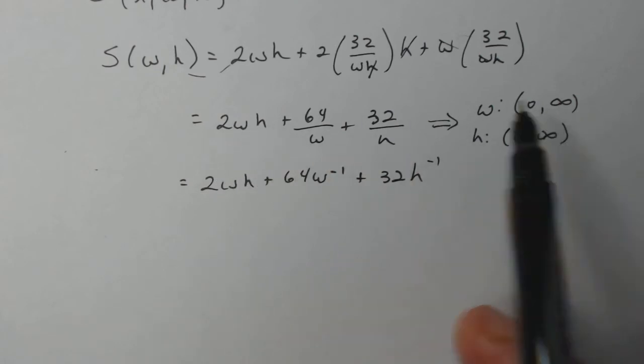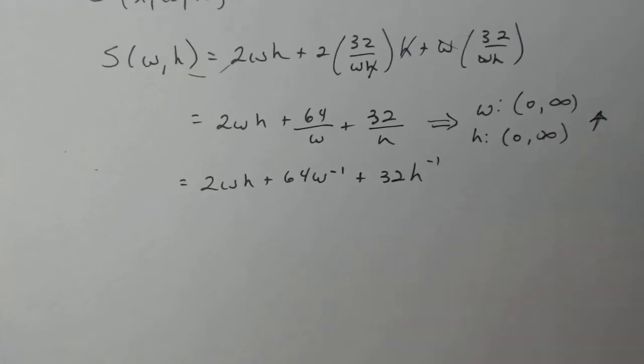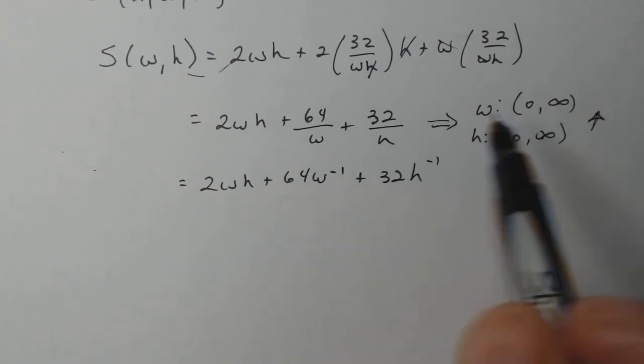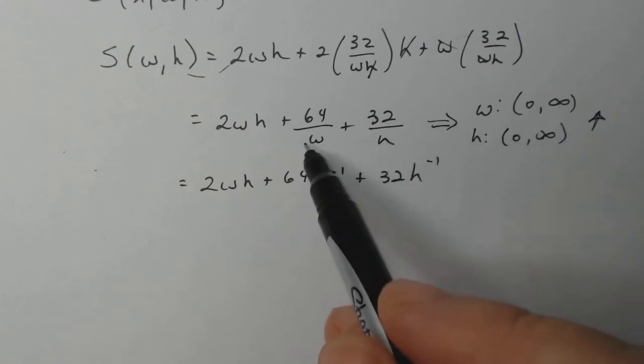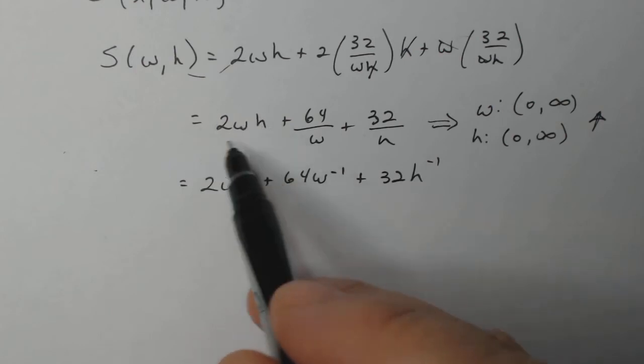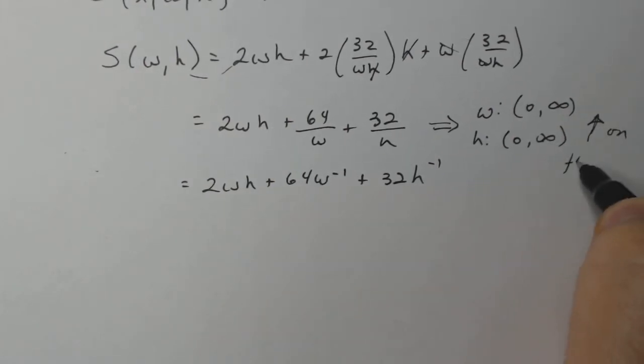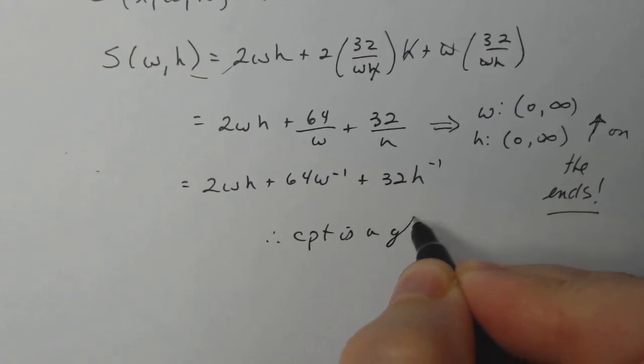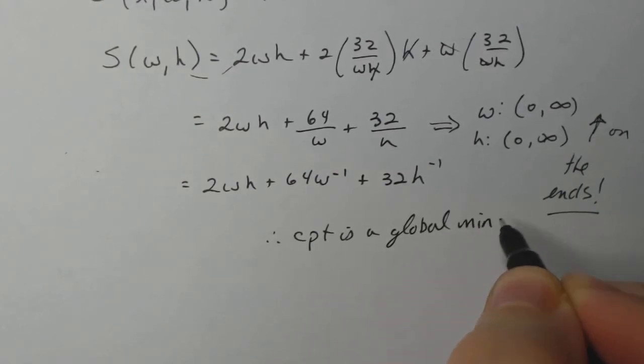So here I have everything going up on the ends. So that means whatever our critical point is has to be a global minimum. So once we find the critical point based on our investigation of this function, we know that we have a global minimum. When you do this on a test, you might want to write up a little paragraph about what I said regarding these limits. Everything is increasing on the ends. That's the key. Therefore, critical point is a global min.